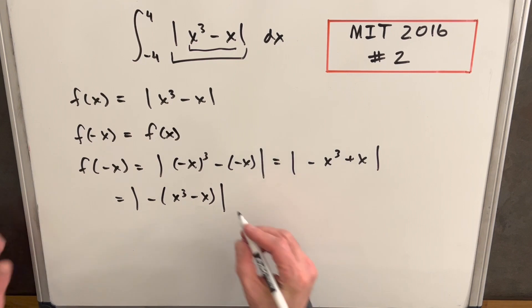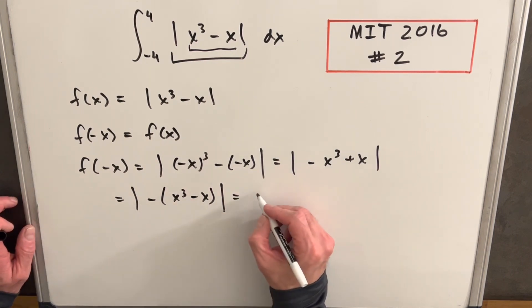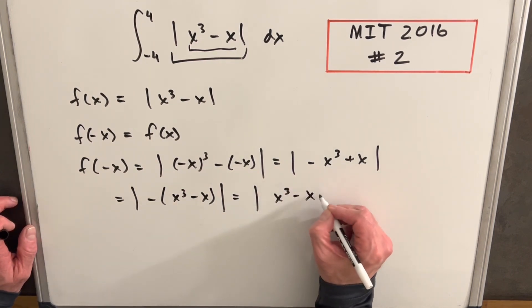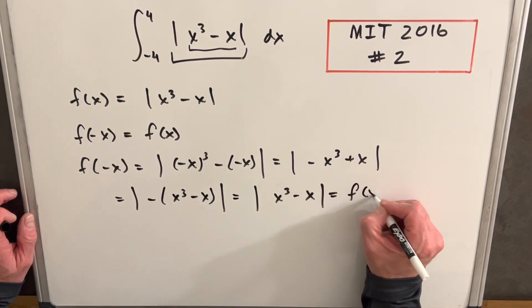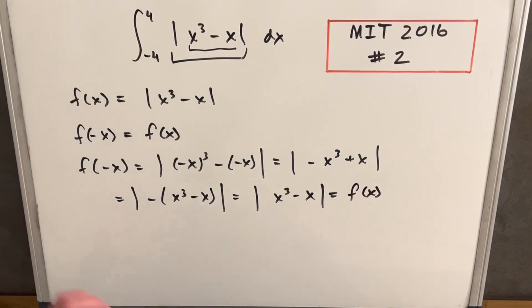But then because it's all in an absolute value, we can just cancel that minus out and write it as absolute value of x cubed minus x. And that's the same thing as our f of x. So we've shown that this is an even function.